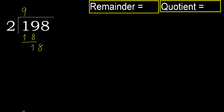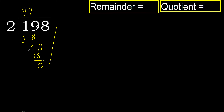Next. 18. 2 multiply by 9 is 18, is not greater. Ok, subtract 0. Next, there is no number, therefore finish it.